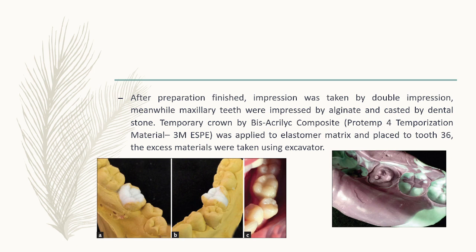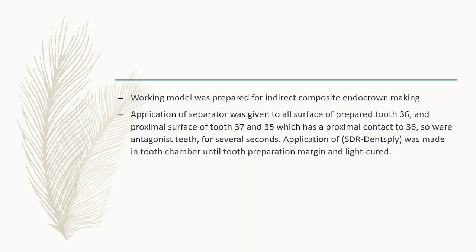Endocrown preparation was done using a wheeled diamond bur taking the coronal part of the tooth structures to the supragingival margin. Gutta-percha was removed with a flat tapered diamond bur 1 mm below the orifice. Pulp chamber preparation was made using a tapered diamond bur, shaping the pulp chamber divergently coronally between 5 to 10 degrees of the tooth axis. Smart Dentin Replacement material was applied on the pulp chamber as a base. After preparation, the impression was taken using a double impression technique, and the maxillary teeth were impressed with alginate and cast with dental stone.